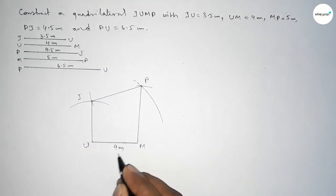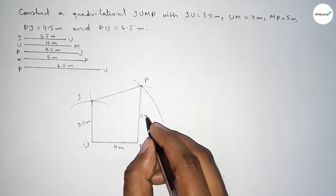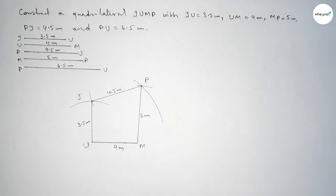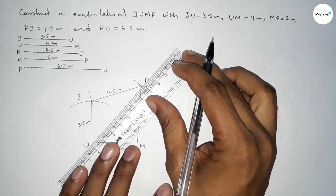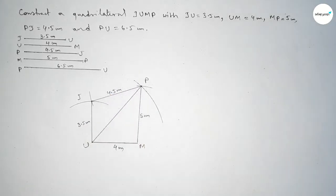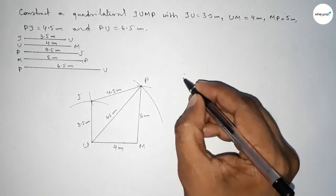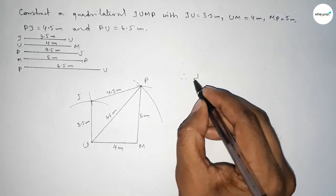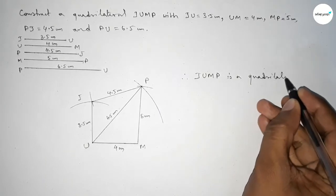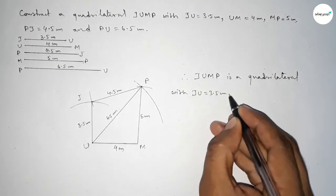Now we join J to U, then join P to M, and then join P to J. This gives us side JU of 4 centimeter, side JU of 3.5 centimeter, side MP of 5 centimeter, and side PJ of 4.5 centimeter. Finally, we join the diagonal PU, which is 6.5 centimeter.